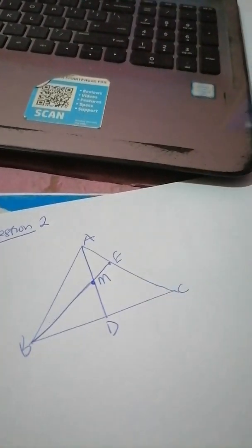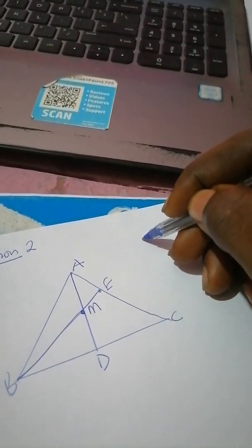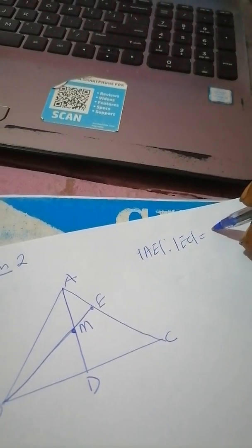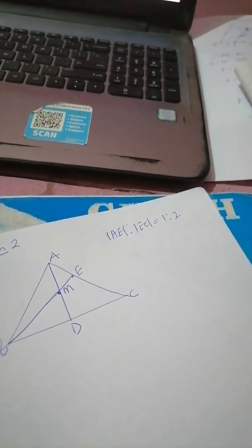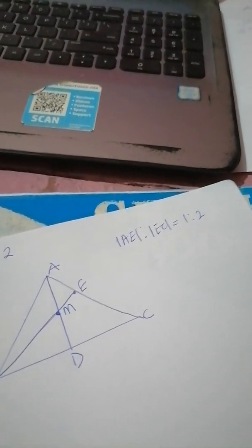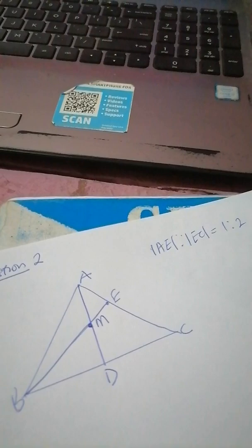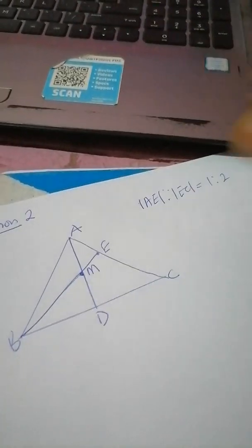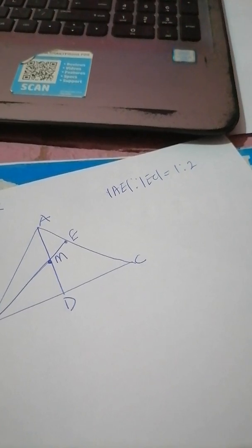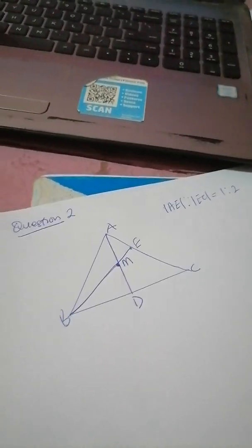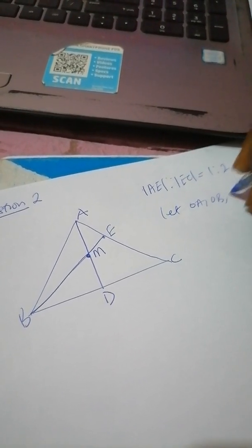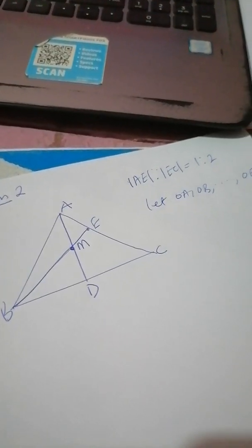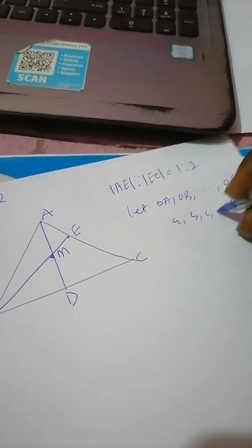We want to prove that this line actually trisects line AC. In other words, we want to prove that the ratio AE to EC is one is to two, depending on how you draw your diagram. We are going to use position vectors and the ratio theorem. Let O be the origin, and let a, b, c, d, e, m be position vectors for points A, B, C, D, E, M respectively.